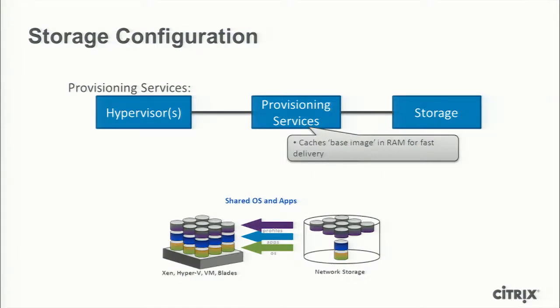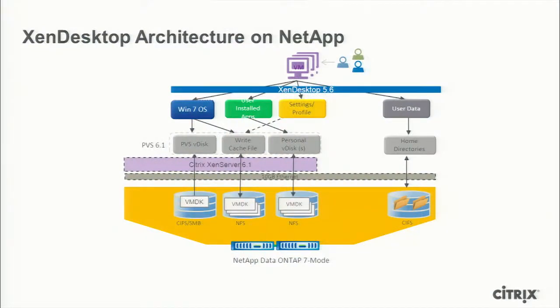At a very high level, you have your hypervisor with your Windows virtualized VMs. Then you have the PVS server, which could be a physical server or a separate VM, used as a streaming solution. This is where you virtualize your OS — it's going to cache it in RAM and deliver it over the network. When you have hundreds and thousands of desktops, they're all pixie-booting over the network, which means your read IOs are split over the network. So the storage sees reduced IO overall — you're mostly concerned with your backend storage being write-IO friendly because it's going to see more write IO traffic.